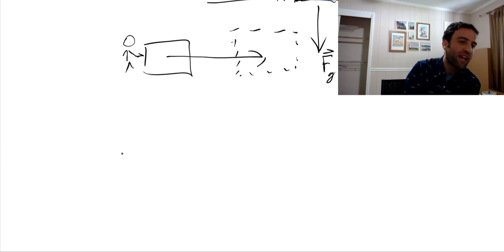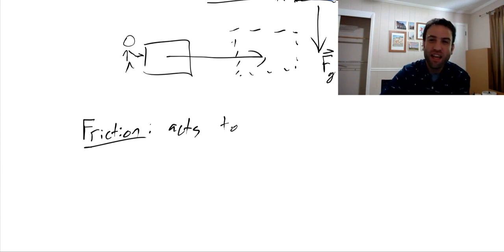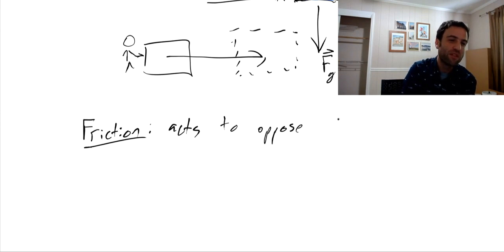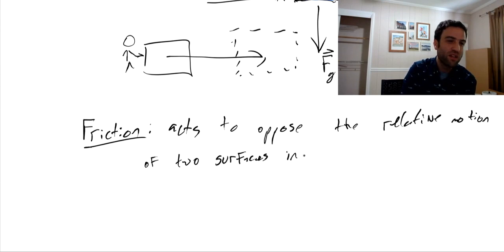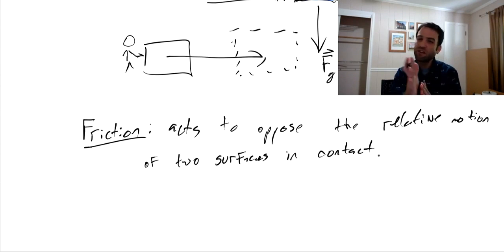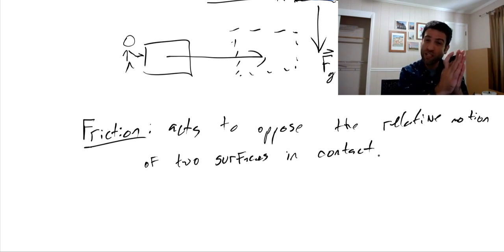To summarize: friction acts to oppose the relative motion of two surfaces in contact. If you bring any two surfaces together and try to move them relative to each other, the force of friction points in a direction opposite to that motion, trying to slow the relative motion down and bring it to a stop.